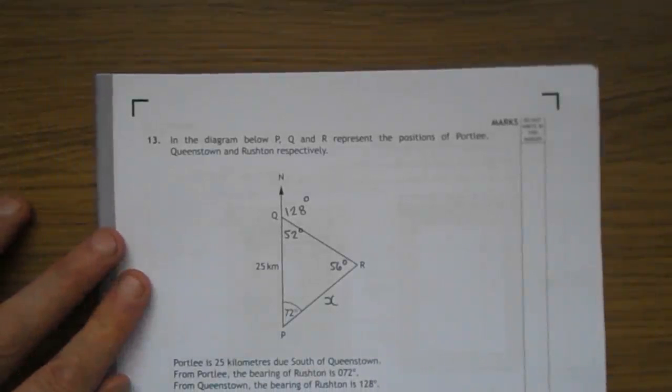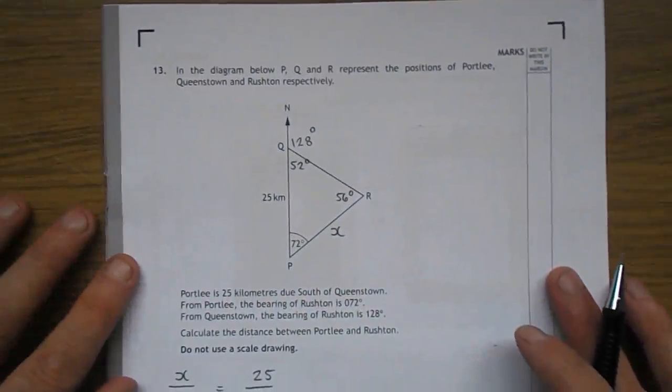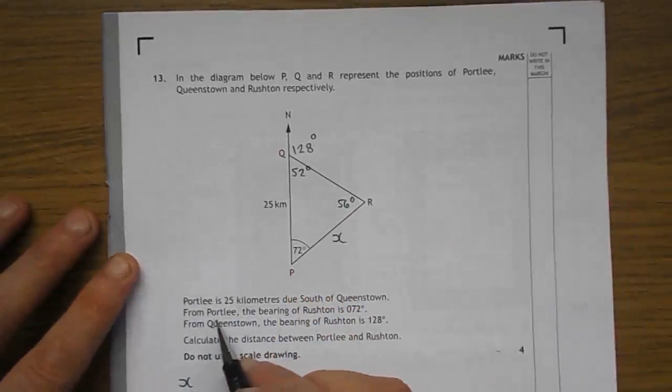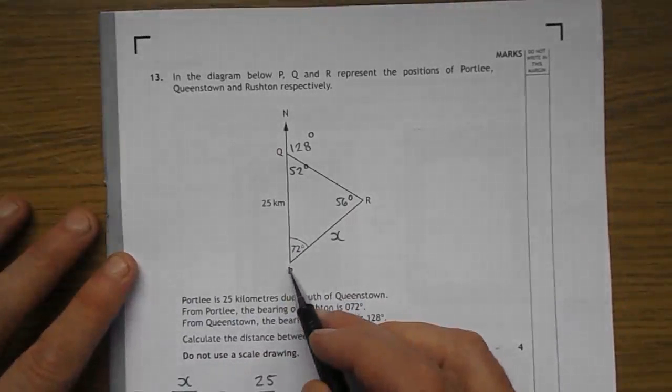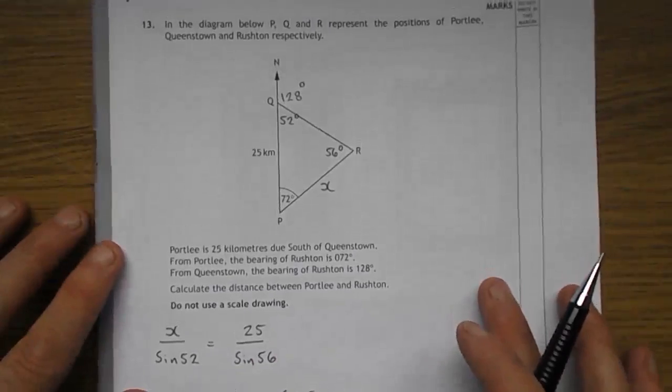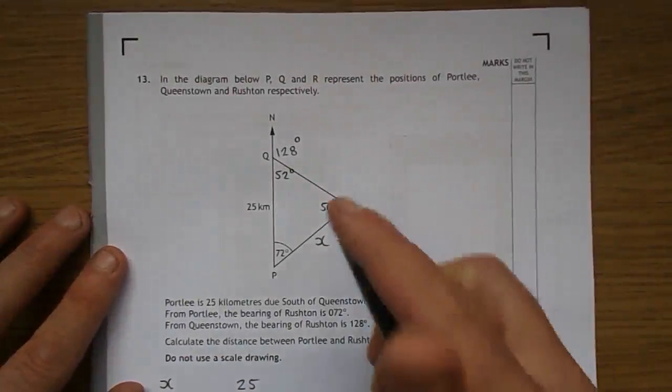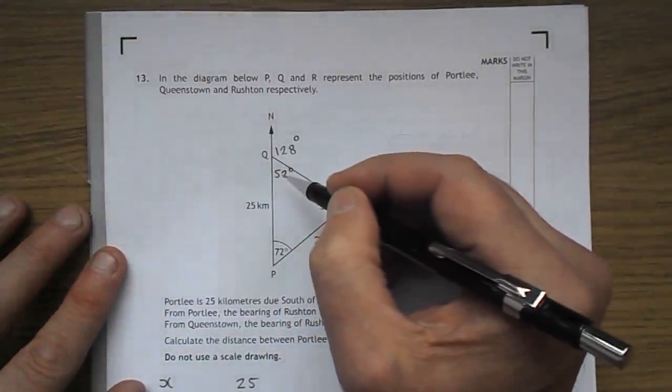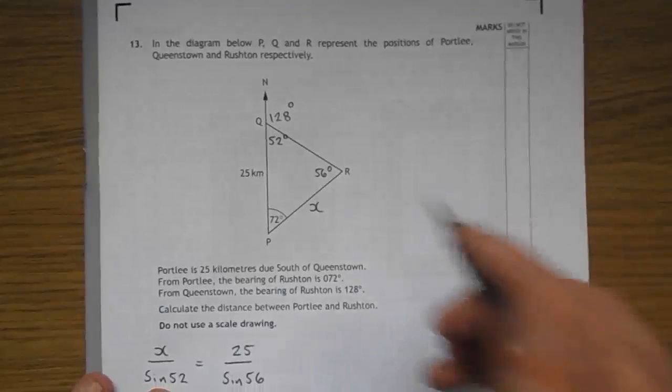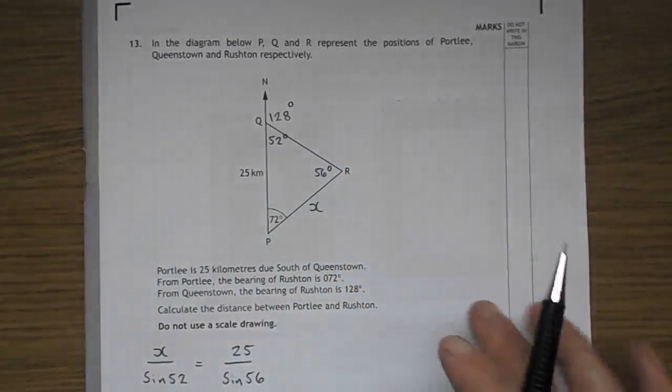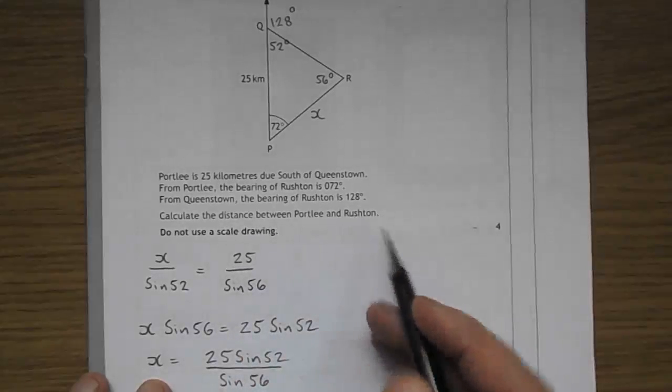Over to question 13. In the diagram below, P, Q and R represent the positions of Portleigh, Queenstown and Rushtown respectively. Let's have a look. Portleigh is 25 due south of Queenstown. So there we have it there. P and Q. That's okay. From Portleigh, the bearing of Rushtown is 072. Port to Rushtown there, that's 72. From Queenstown, the bearing of Rushtown is 128. From Queenstown to Rushtown, that's 128. Now, we have a set line here. So they add up to 180. So that gives you that as 52. That's 72. That's 52. They'll add up to 180. That makes that 56.